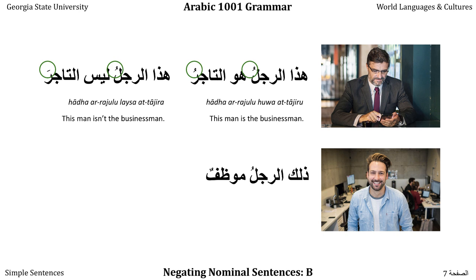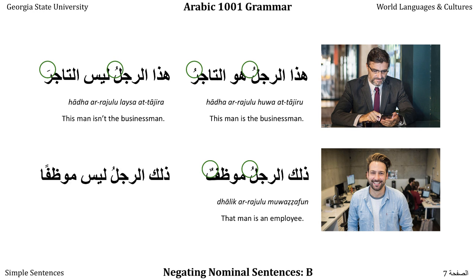If we say that man is an employee — 'Hatha al-Rajulu Muwadzafun' — both Ar-Rajul and Muwadzafa are by default in the Marfu case. Ar-Rajul gets a single Dhammah as definite; the second gets Tanwina al-Dhamm as indefinite. If we make him not an employee: 'Thalika al-Rajulu Leysa Muwadzafan,' where Thalika al-Rajulu stays in the Marfu case as the Mubtada, but Muwadzaf is in the Mansoub case because it follows Leysa, and being indefinite it takes Tanwina al-Fatah and an extra unpronounced alif.